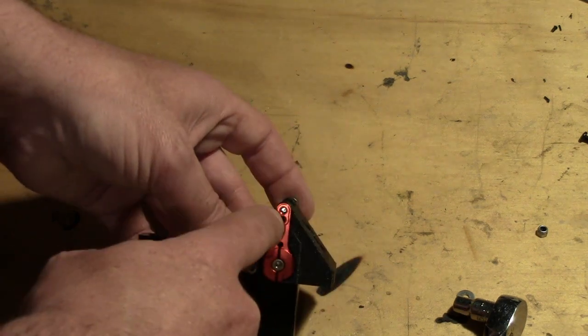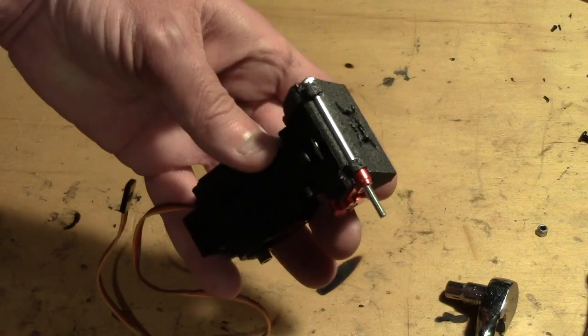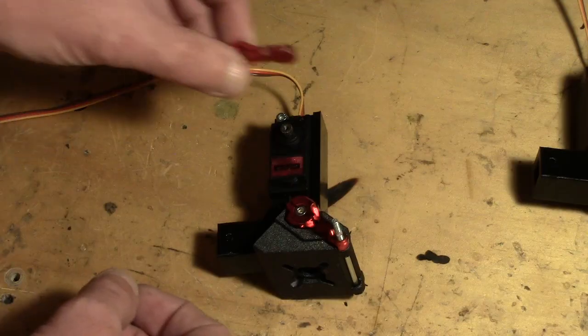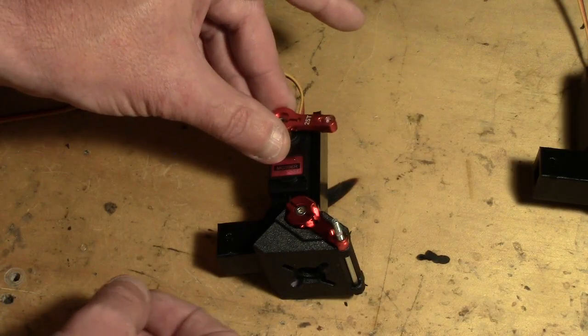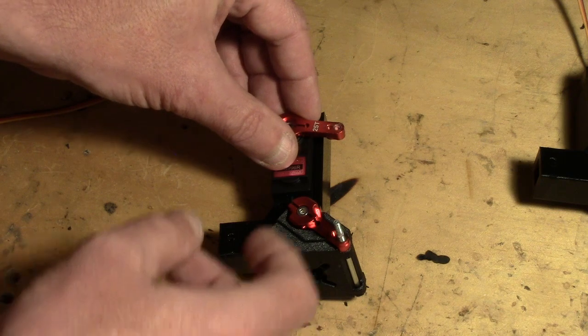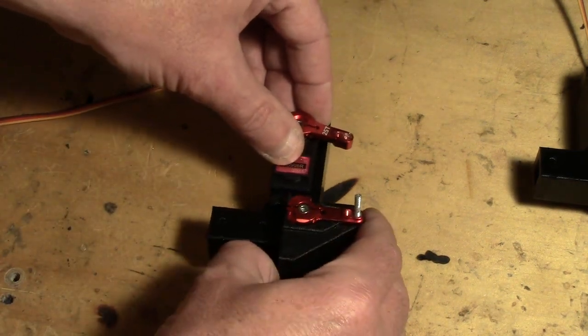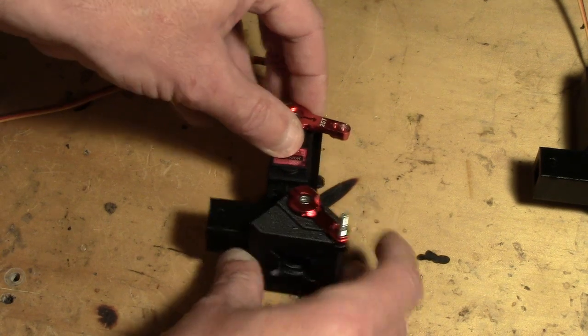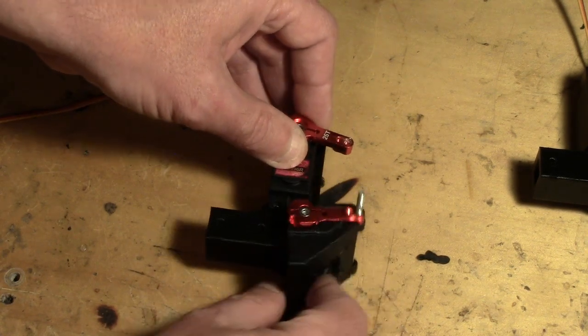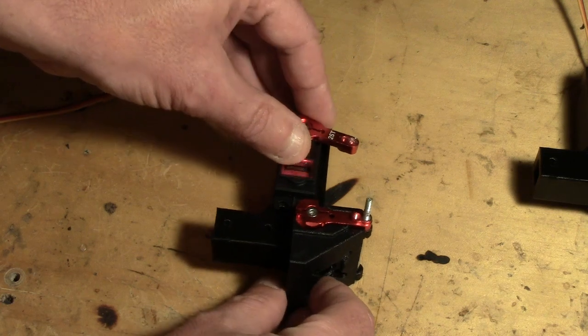This same bolt as it comes through will also be what we use to hold the ball joint. We need to mount the servo horn so that the neutral position of the servo, that is the midpoint of its range of travel, corresponds to the midpoint of the range of motion between horizontal and vertical of the tilt stage.